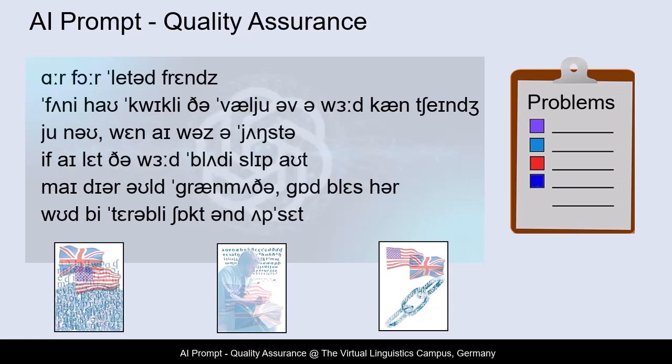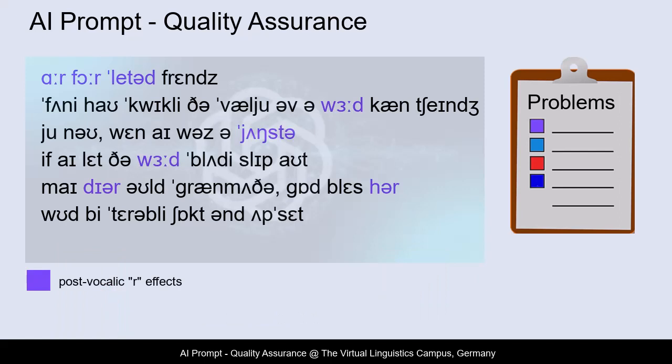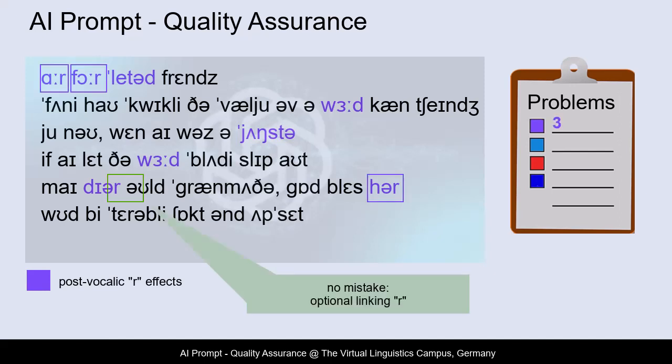In present-day English, the most important phonological dialects are the British variant Received Pronunciation (RP) and North American English. The most obvious difference between them is the absence of the post-vocalic R in RP. Hence words like 'our,' 'for,' 'lettered,' 'word,' 'youngster,' 'dear,' and 'her' should not contain a final R in RP. The GPT solution is pretty inconsistent here and exhibits three mistakes.